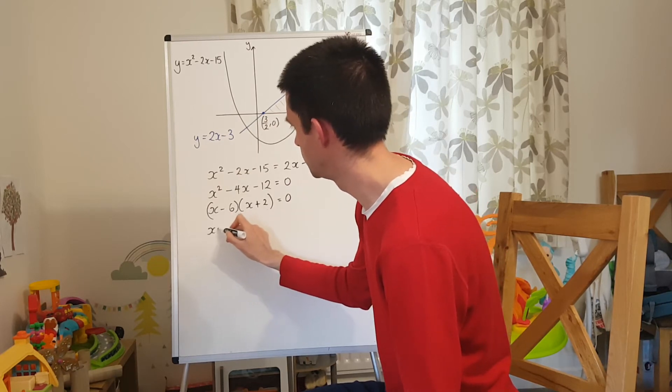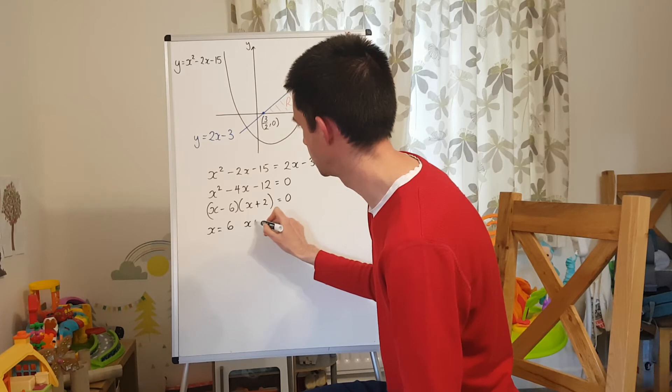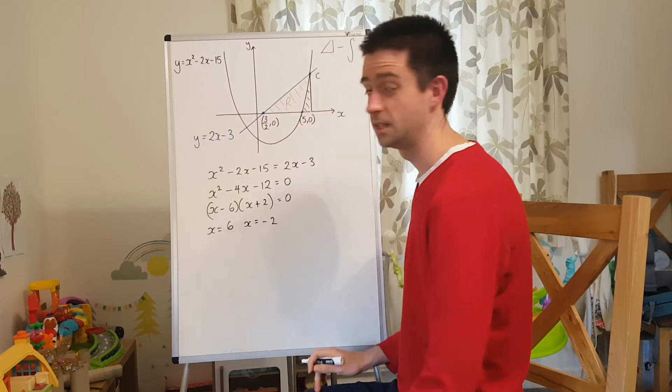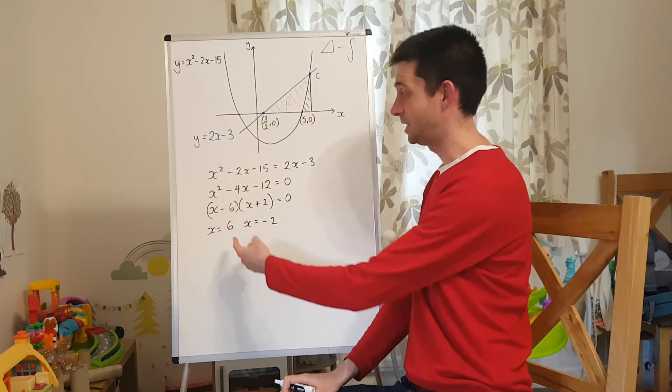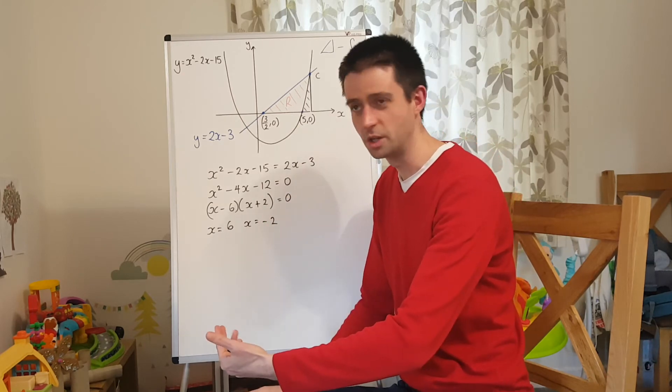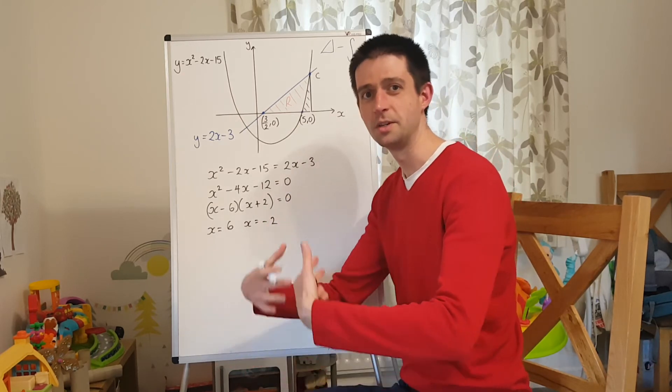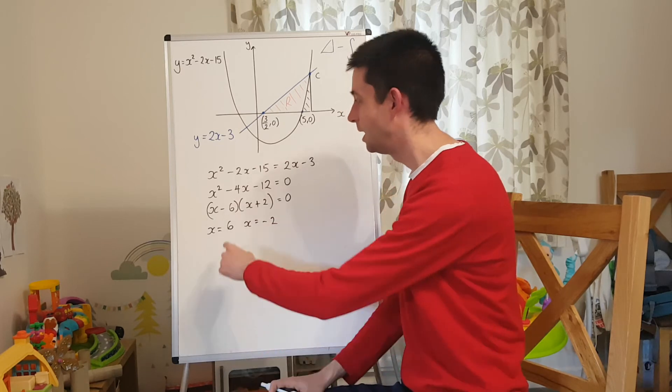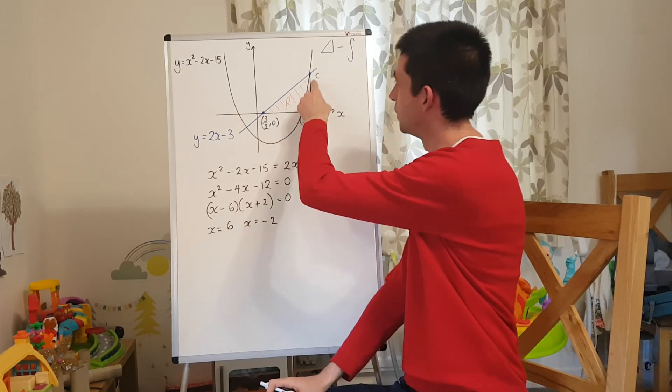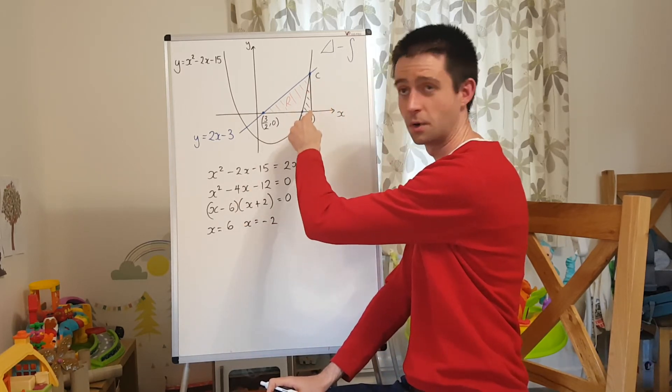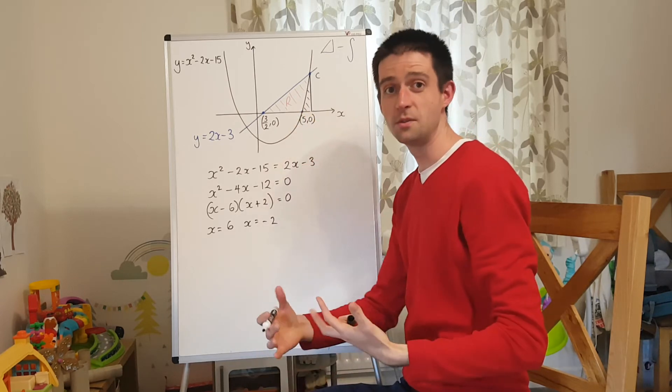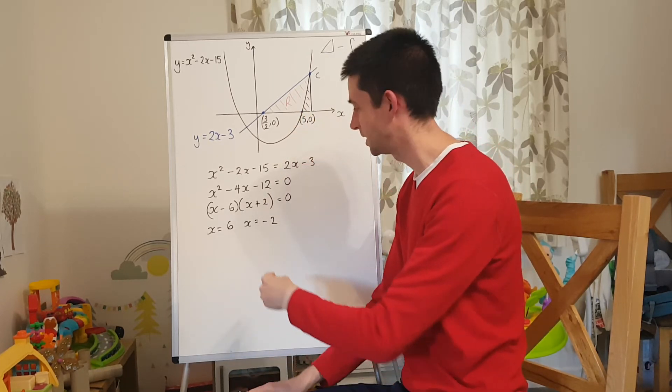Which means my two solutions are x equals 6 and x equals negative 2. Now clearly the one that I want is 6. Let's just think about this question a minute. Am I happy with this answer? Does it make sense? Checking as I go. x equals 6 is this point here. That's further over to the right in the positive direction of 5. So it makes sense. Good. I'm happy with that.